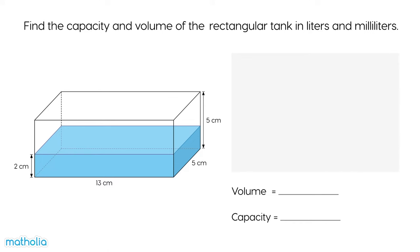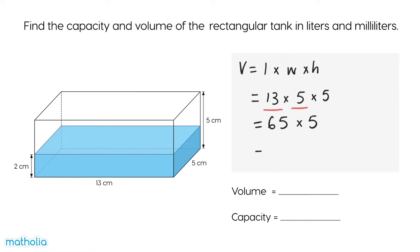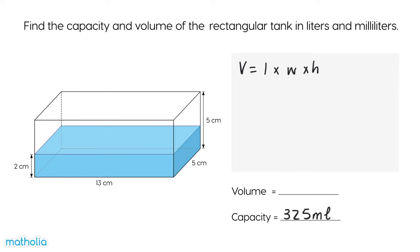We can find the capacity of a rectangular container by multiplying its length by its width and its height. 13 times 5 times 5 equals 65 times 5 equals 325. The capacity of the container is 325 cubic centimetres, which is 325 millilitres.